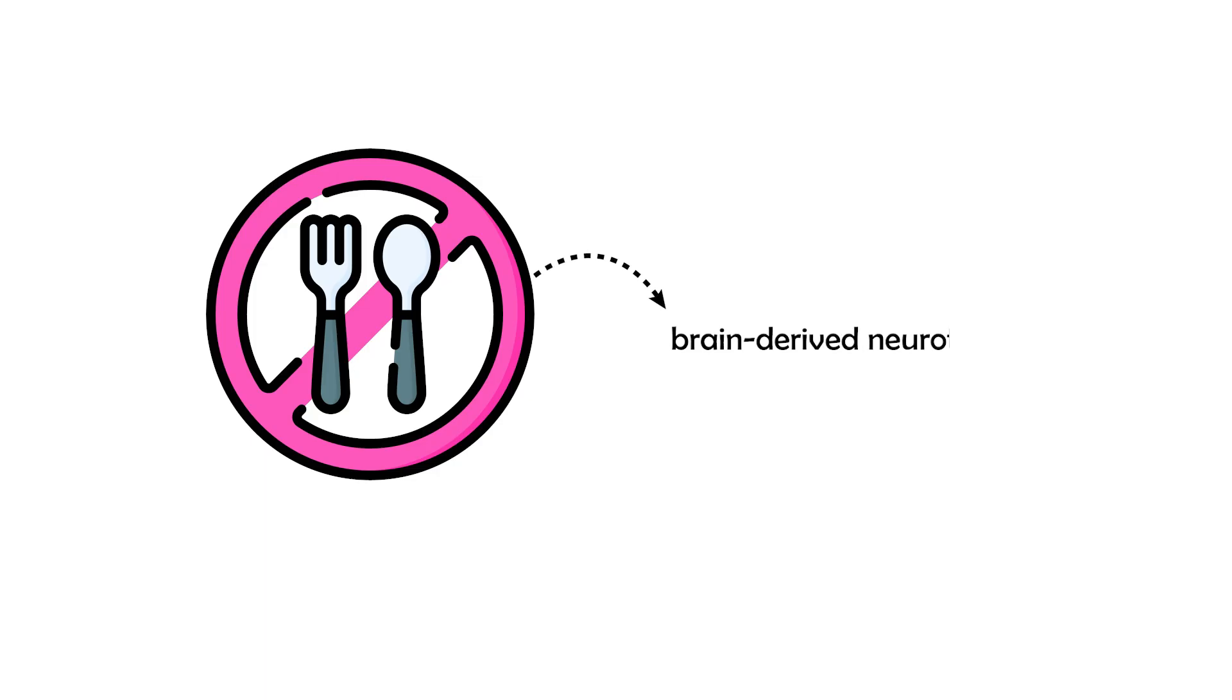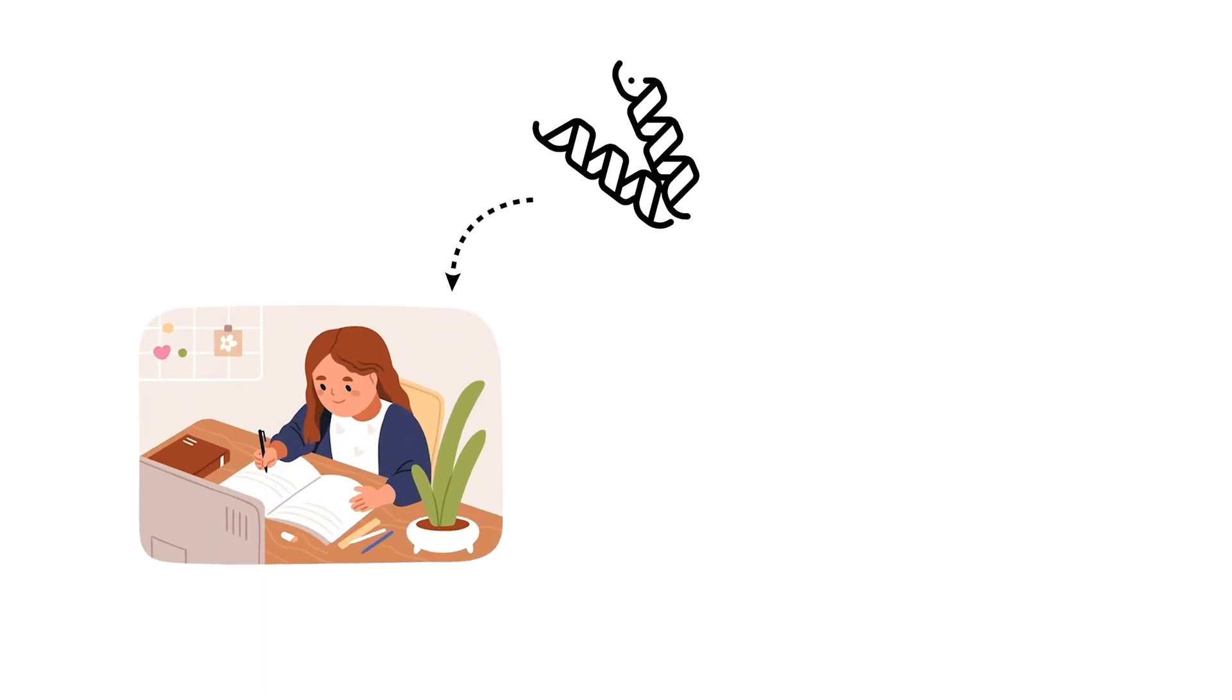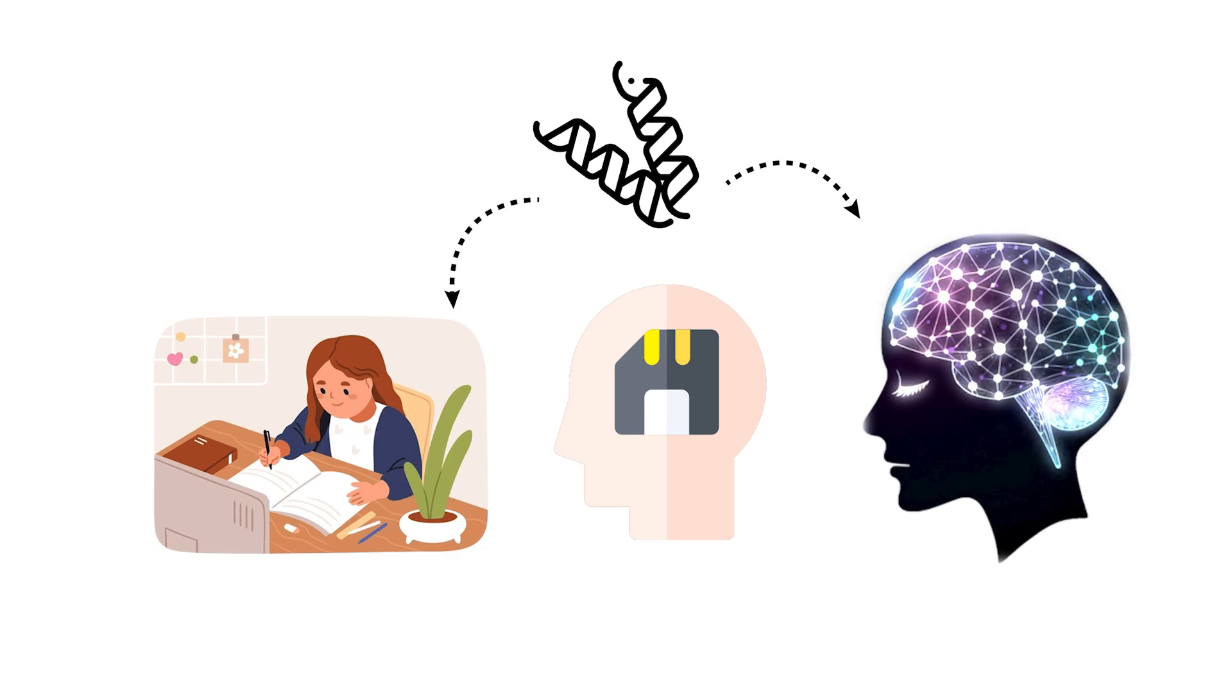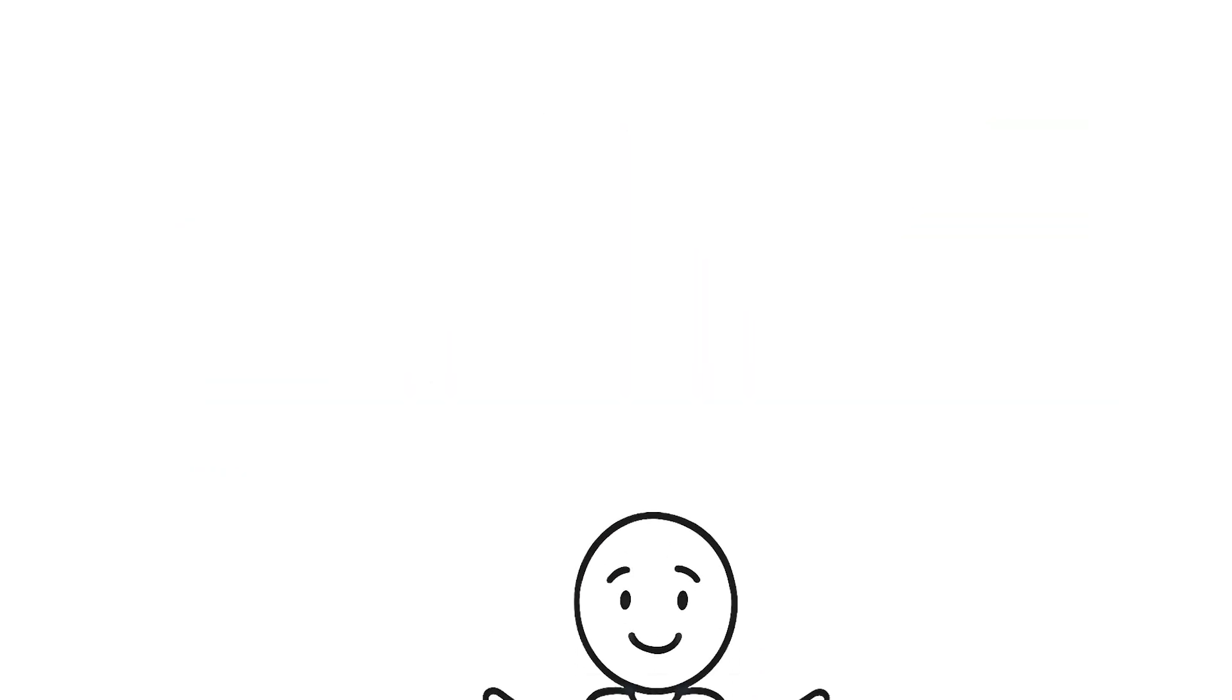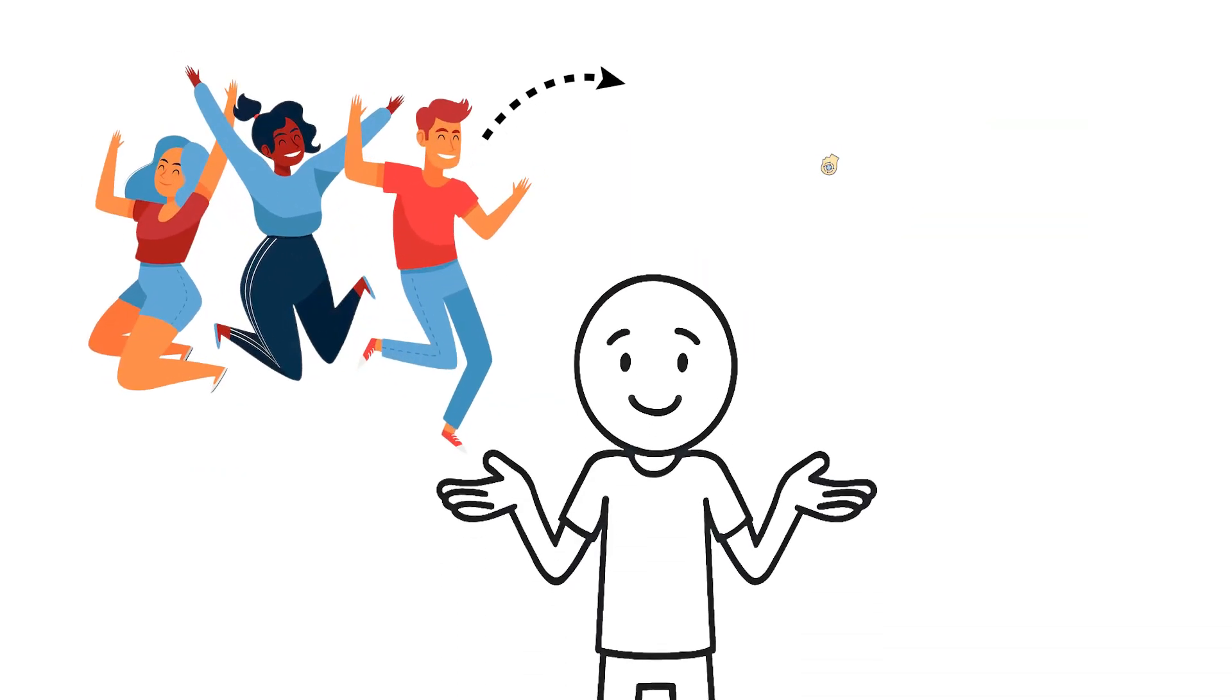At the same time, fasting triggers the production of brain-derived neurotrophic factor, a protein that's essential for learning, memory, and forming new neural connections. Studies show that intermittent fasting raises BDNF levels significantly, which helps explain why so many people report sharper focus when they go several hours without food.